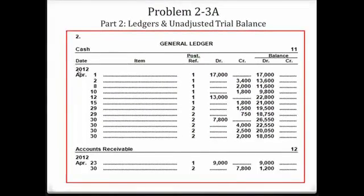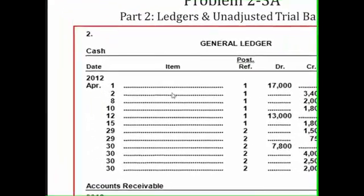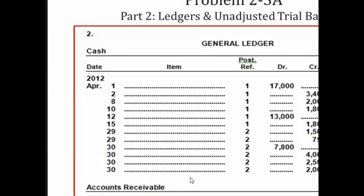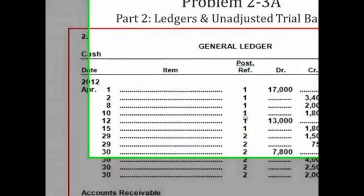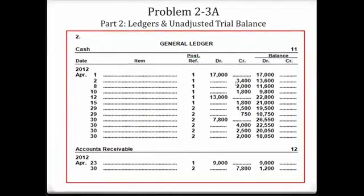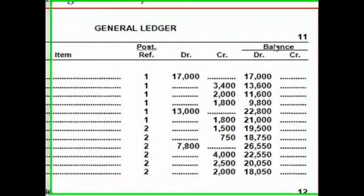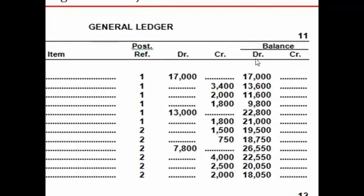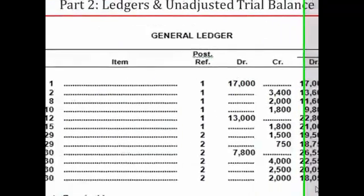The date is for the transaction of the journal entry, the item is for a description, and for normal journal entries we do not record a description or an item. Post reference refers to the journal pages that the particular transaction can be found on. The first debit and credit column is for what happened in the actual journal entry for that particular account only, and the second debit and credit column for the balance is to run a running balance for this particular account.